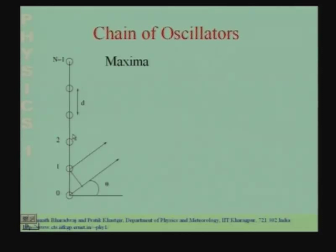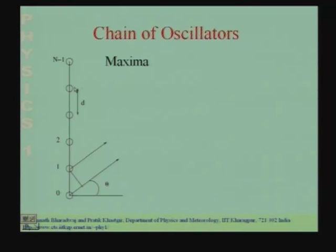Good morning. In yesterday's lecture, we were discussing chain of oscillators. We had a chain of radiators, each of which was fed an oscillating signal. Each radiator, which we refer to as an oscillator, radiates in all directions, and the total radiation received by a distant observer at an angle theta is the sum of all the waves emitted by all of these oscillators. We had calculated the directional dependence — the theta dependence — of the radiation that comes out.